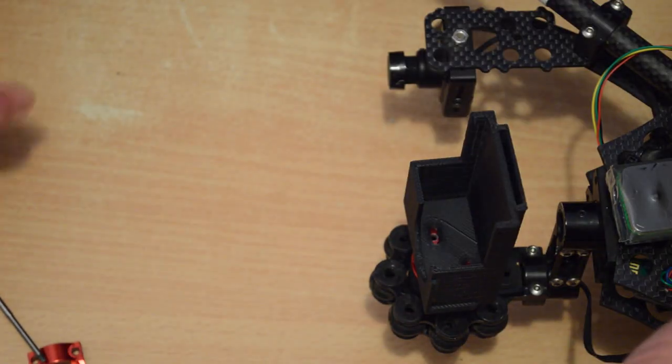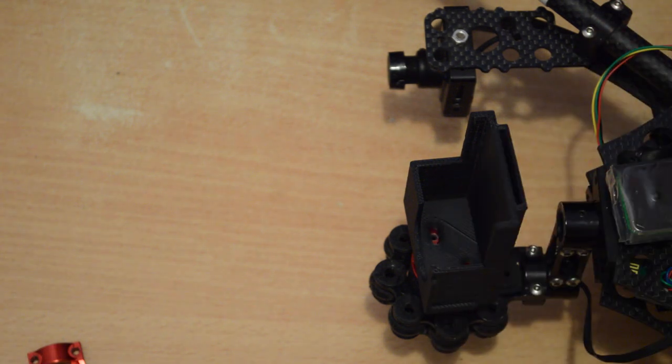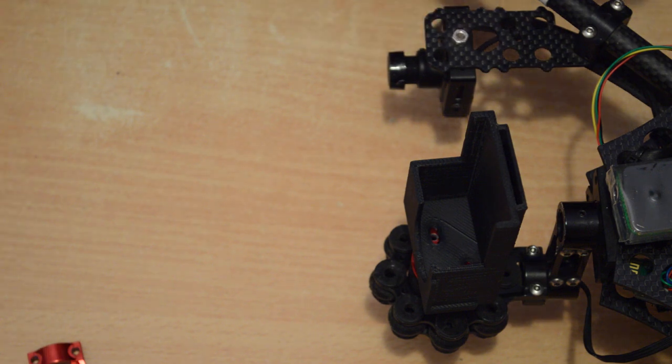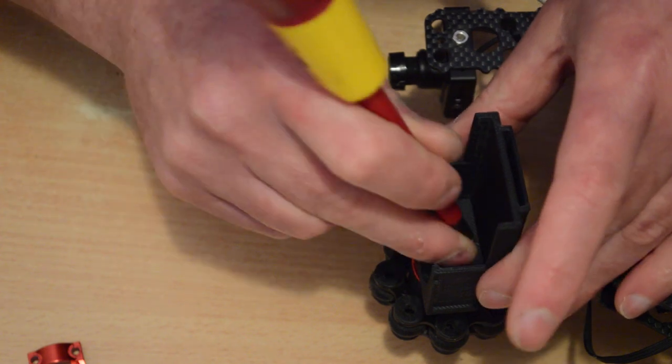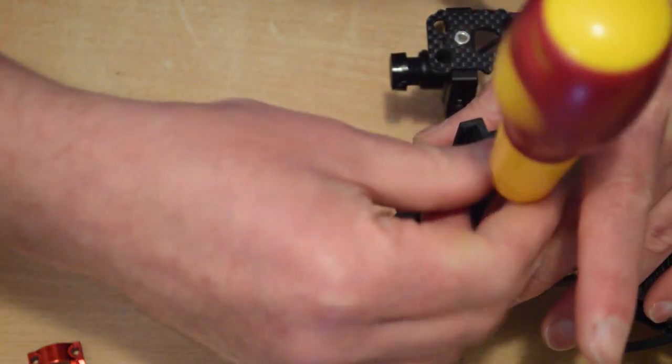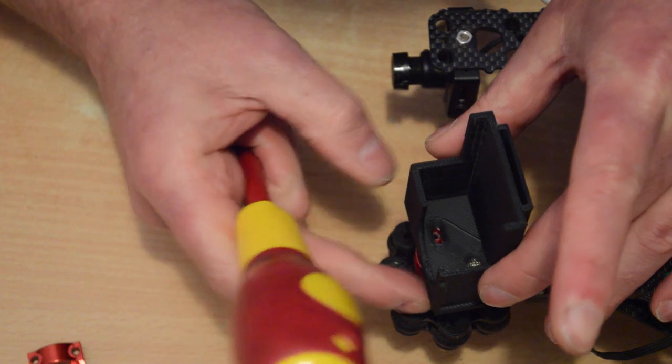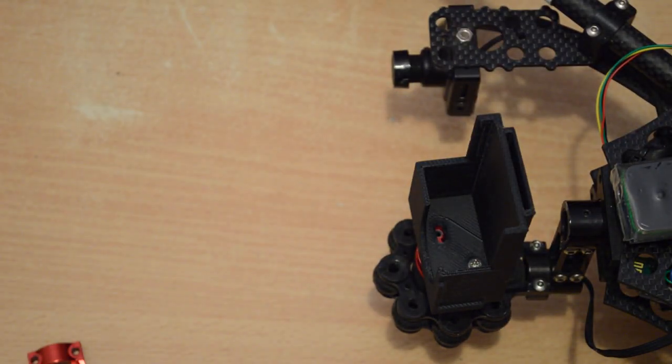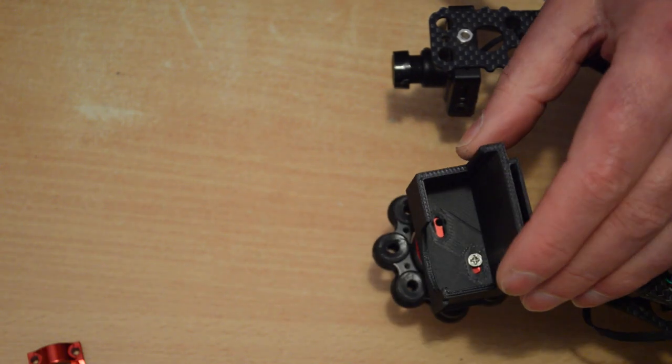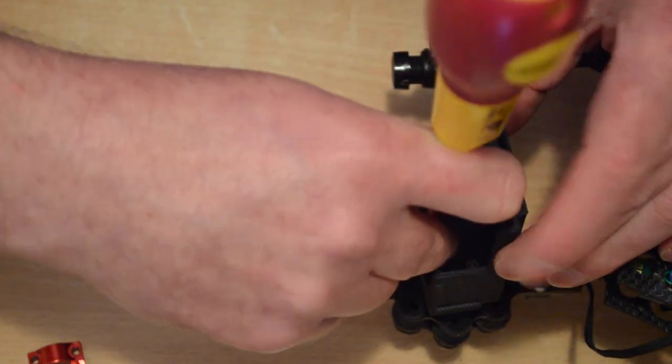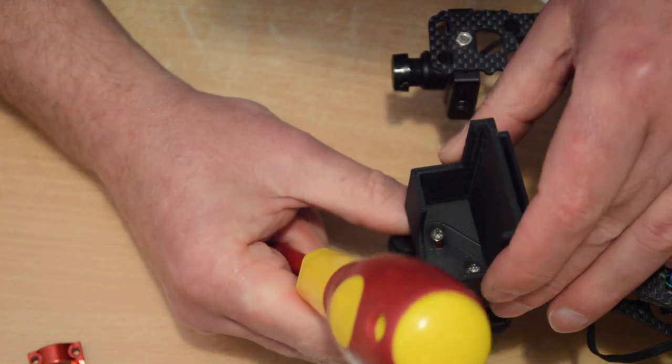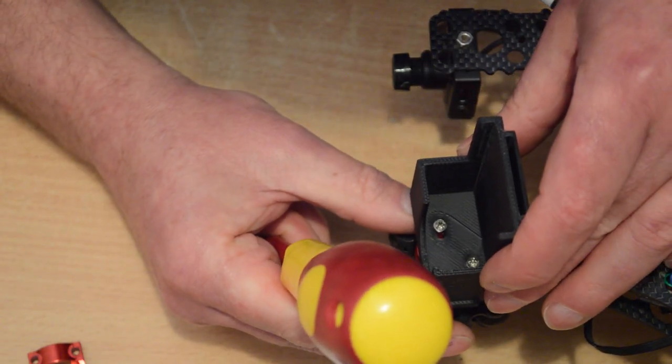So this screws on to the back of our pitch gimbal motor. Like I said, you use the little countersunk screws that you get free with the motor. They're Phillips head, so I'll grab my Phillips head screwdriver and a dot of Loctite. One screw in.